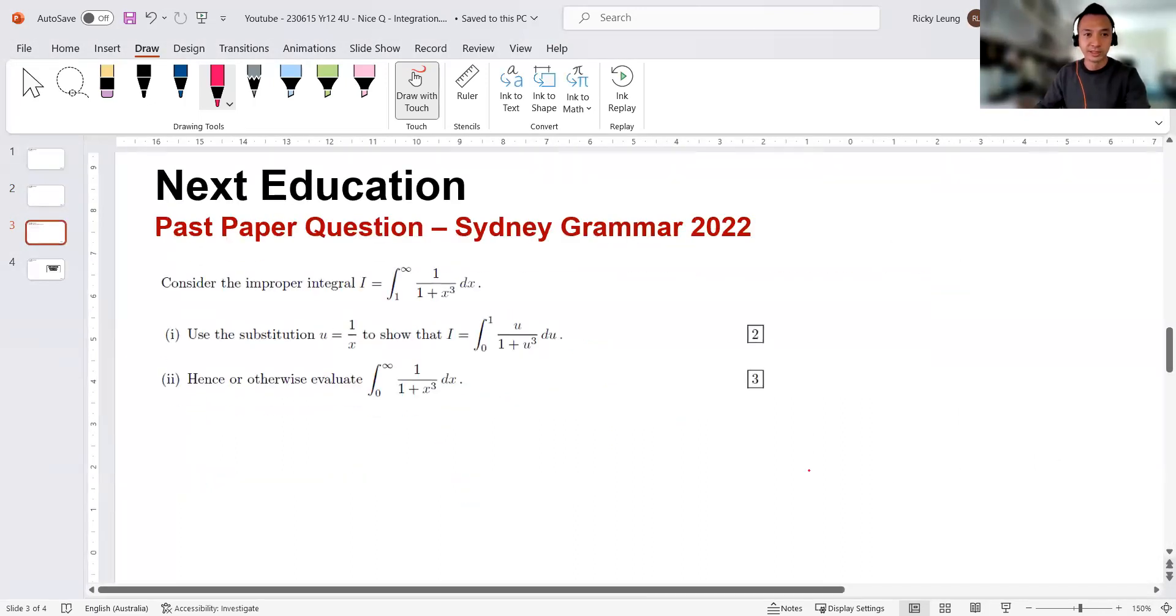The question looks like this. Consider the improper integral. Improper integrals are basically when one of the limits is infinity, right? One or more of the limits are infinity. In this case, the top limit obviously is infinity and the bottom one is one. Consider that integral, use a substitution to show that, and then hence solve that.